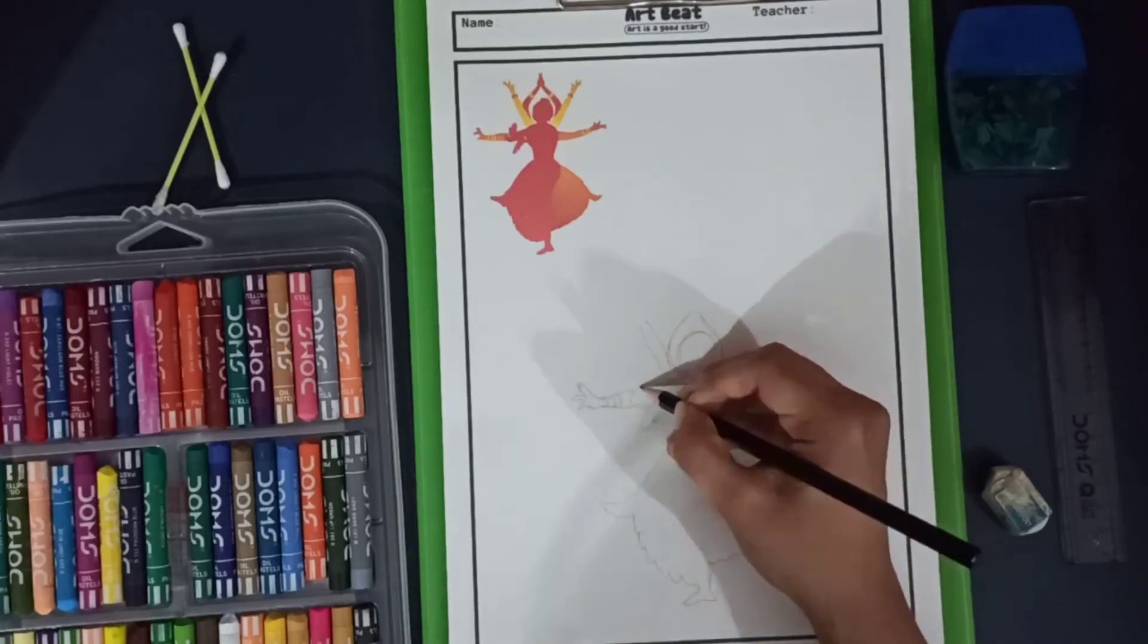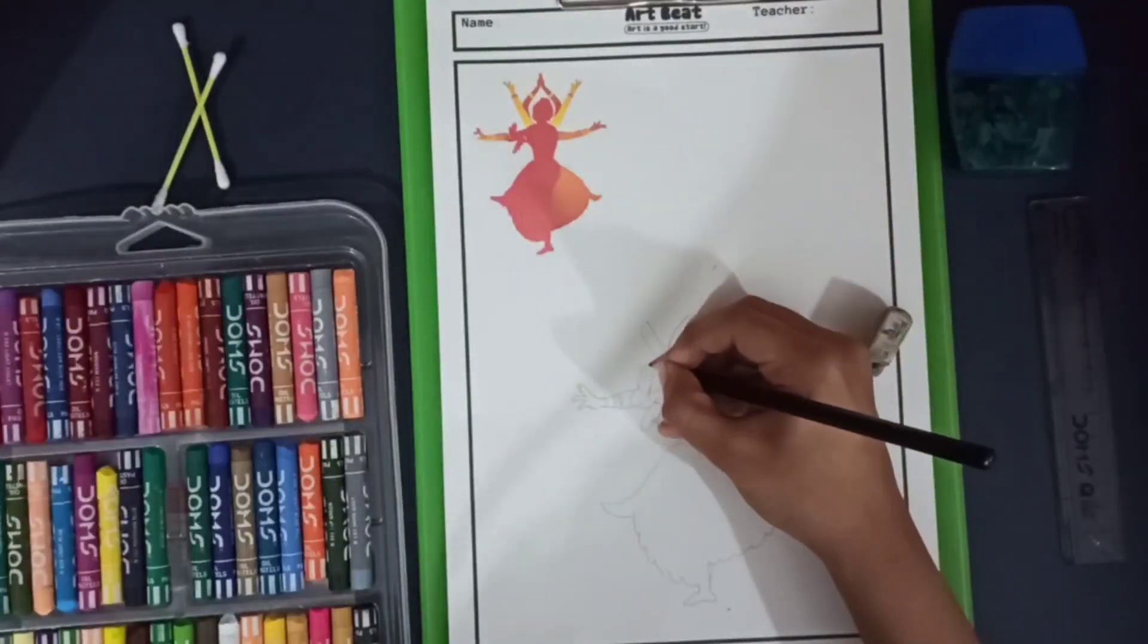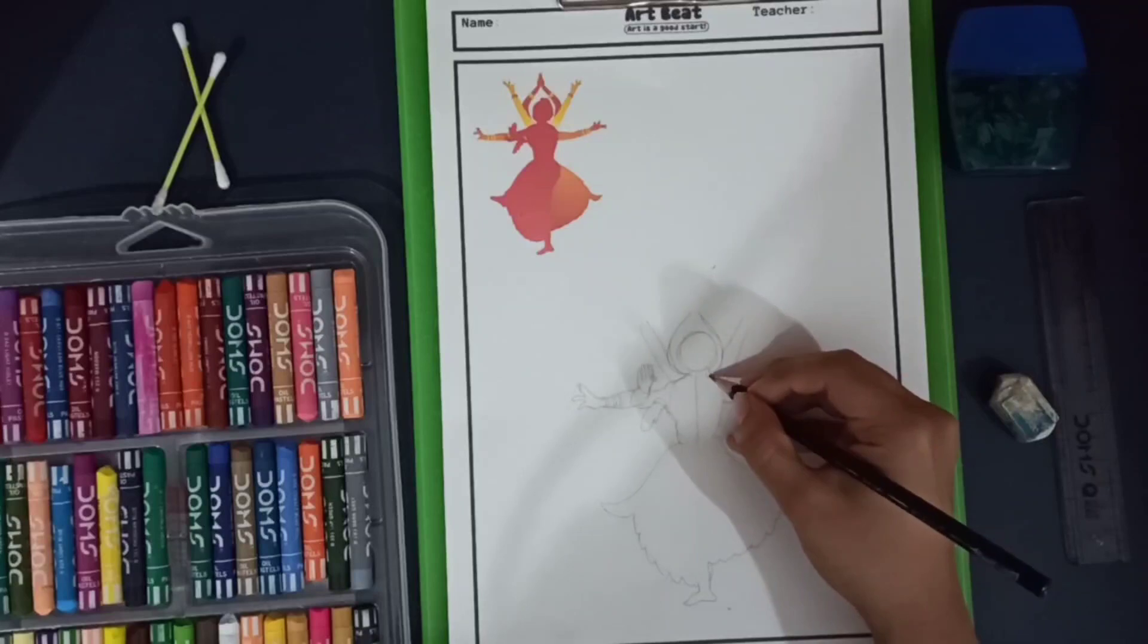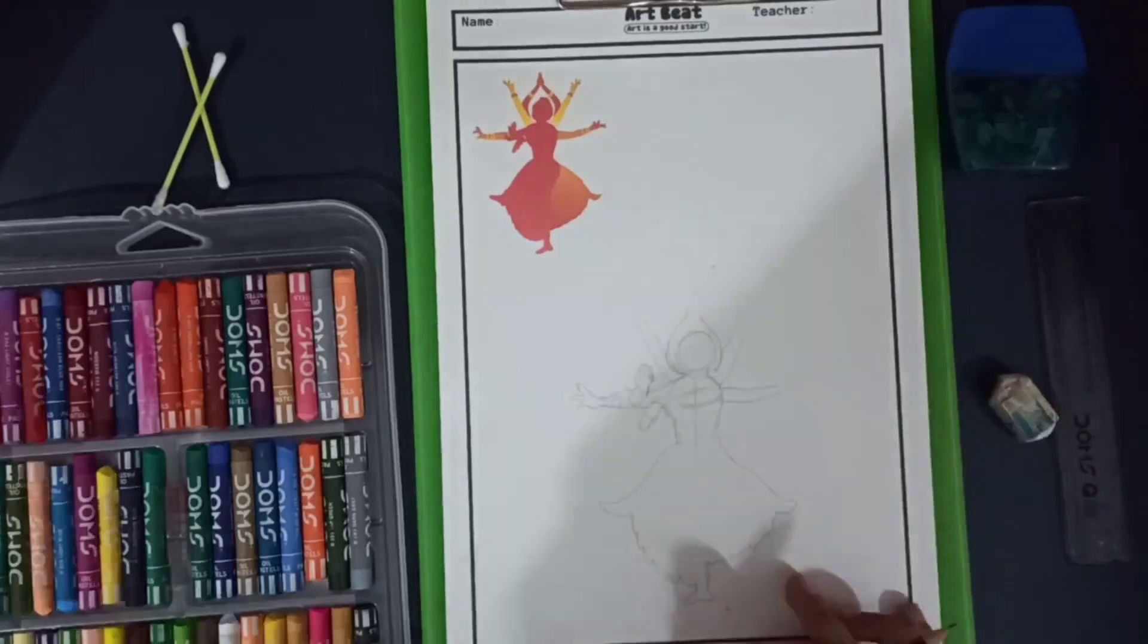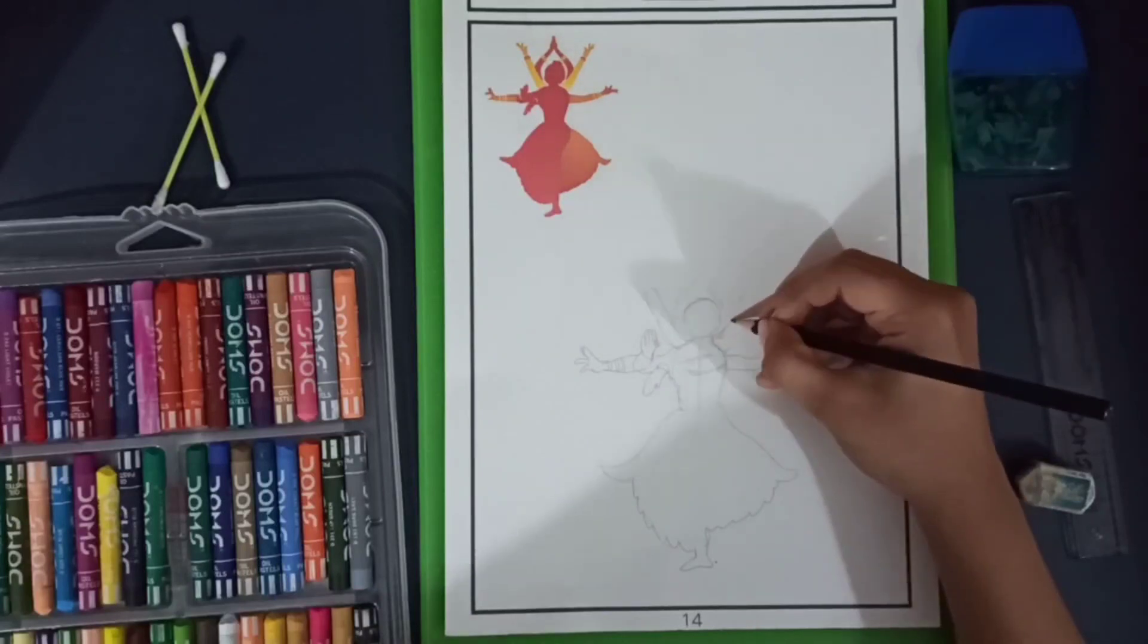Her fingers will be in different shapes or designs, which we call mudras. You have to make sure that the fingers or the image that she is trying to show with her hands has to be exactly shown in this reference image.